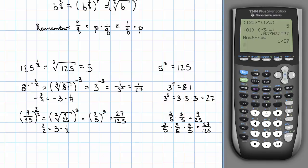Again, we can just enter this in the calculator. 9 25ths to the 3 halves power. Make that a fraction. We do indeed get 27 125ths.